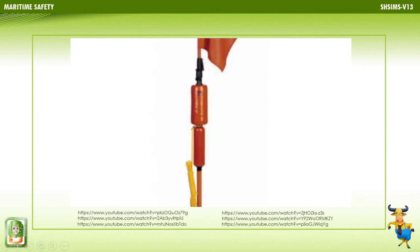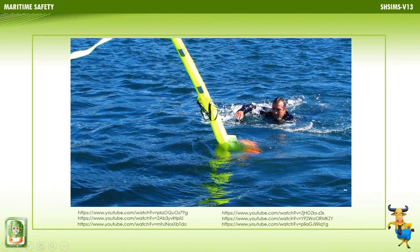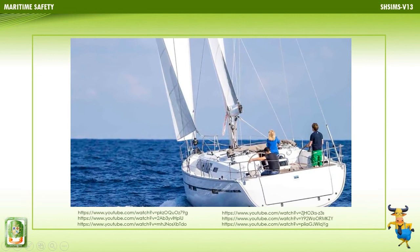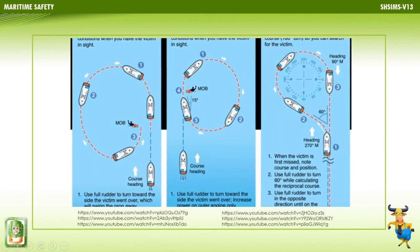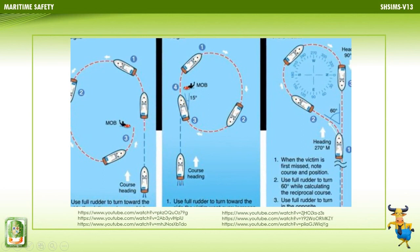While simpler than a Williamson turn, the alternative method depends heavily on the wake or floating datum being visible, which may be rapidly lost in bad weather, especially at night or in poor visibility. The size of the turning circle will determine at what point the vessel returns to cross its original water track. With a large turning circle, there is a potential risk of running over the floating datum or even the man overboard if reference is lost during the turn.